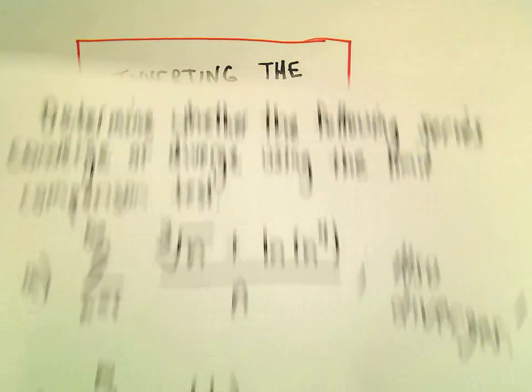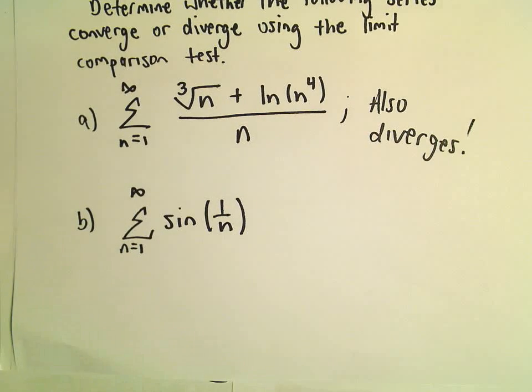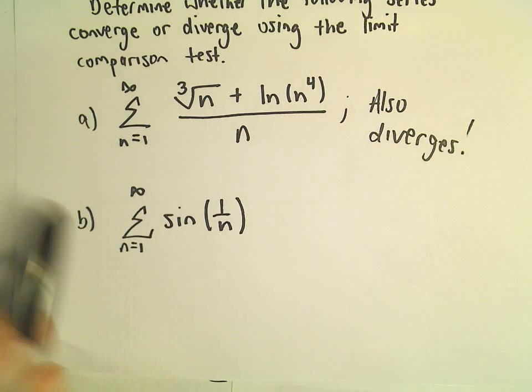All right, here we're going to do one more example using the limit comparison test. So here we've got sine of 1 over n, the series from 1 to infinity.